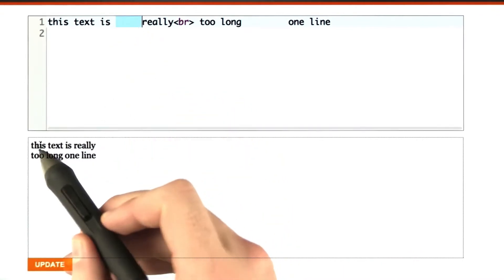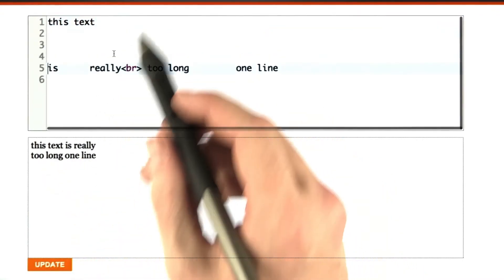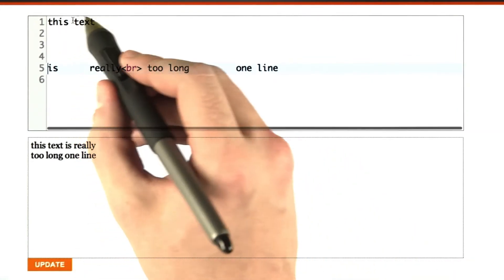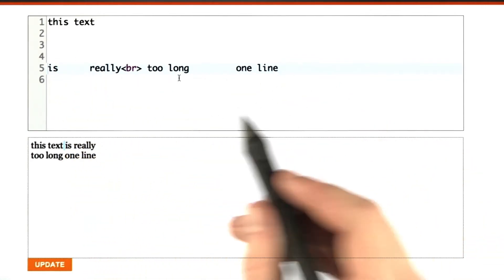All this white space turns into one single space. All of these new lines here turn into one single space. This text space is really, you get the idea.